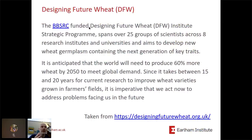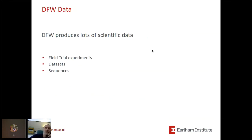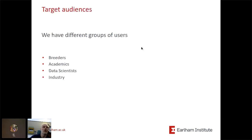We are funded as part of an infrastructure program that covers eight different research institutes and universities, and there are over 25 groups of scientists. The idea is basically to try and increase the yield of wheat — by 2050 we need to produce 60% more wheat to meet global demand. We produce lots of scientific data in various types: field trial experiments, datasets, genomic sequences, amongst many others. We also have different groups of users — breeders, academics, data scientists, and people in industry — all requiring different things from the data.